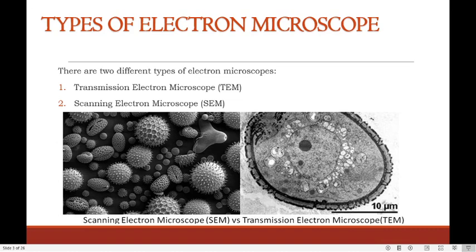Electron microscopes are of two types: first, transmission electron microscope or TEM, and second, scanning electron microscope or SEM. Here you can see the figures of scanning electron microscope and transmission electron microscope.